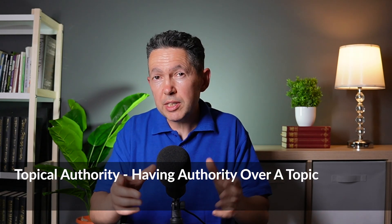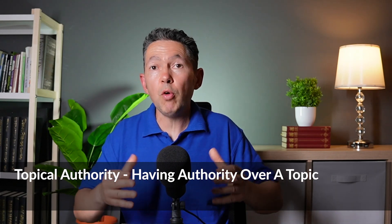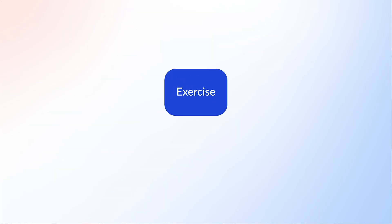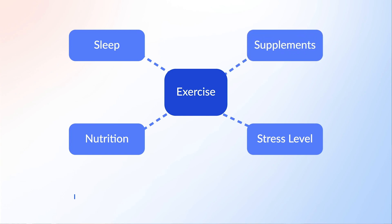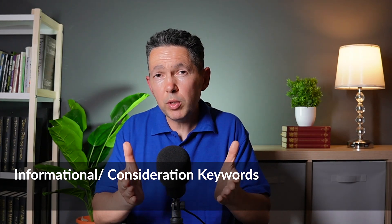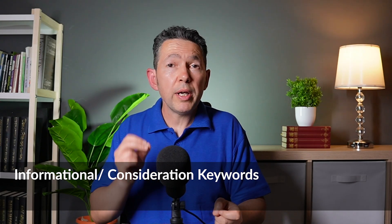Topical authority, as the name implies, is having authority over a topic. For example, if your website is about exercise, then having content on topics that directly affect exercise — such as sleep, nutrition, and supplementation — will increase your overall topical authority, which will in turn make your content more relevant to somebody searching for information on exercise. Informational and consideration keywords, which we covered in the previous lesson, can really help you increase your topical authority, so make sure you include those in your content.